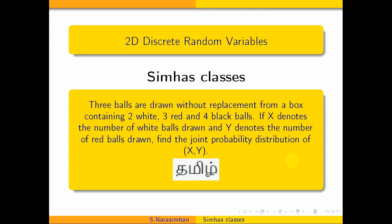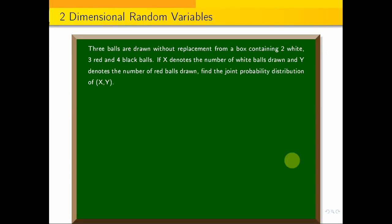Hi students, welcome to CMOS classes. Two-dimensional random variable — in two-dimensional discrete random variable, joint probability mass function. Let's see the question.